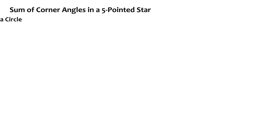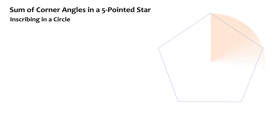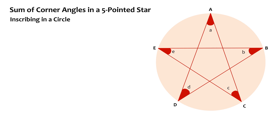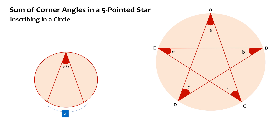There are several methods to find it out. One can be by inscribing it in a circle. Let's see how this works. We should know that a regular pentagon can be inscribed in a circle, and therefore a pentagram like this can also be inscribed in a circle. So let's do it. Now, one thing about inscribed angles is that the measurement of an inscribed angle is half the measurement of the intercepted arc.